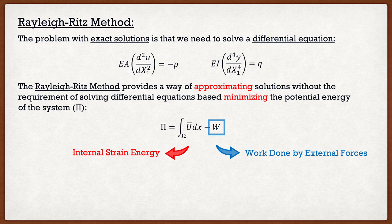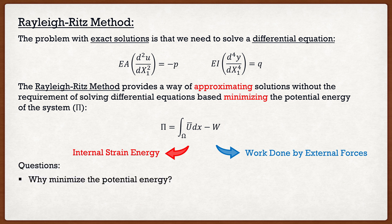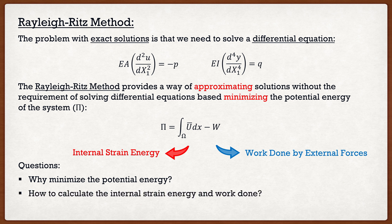Even though it looks really simple, we probably have a lot of questions. The first is: why are we minimizing this potential energy? The whole goal of the Rayleigh-Ritz method is to minimize potential energy, but we haven't said why. Another question is: how do we calculate this internal strain energy and the work done? The formula is very general and doesn't provide much insight. And finally: how do I minimize the potential energy and solve for my approximate solution?